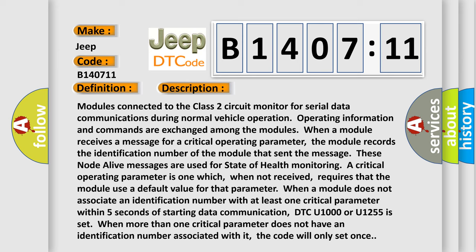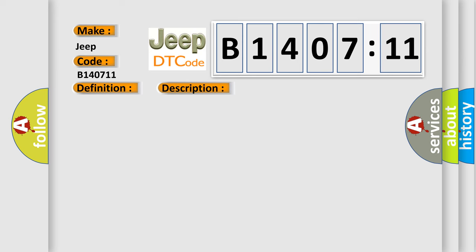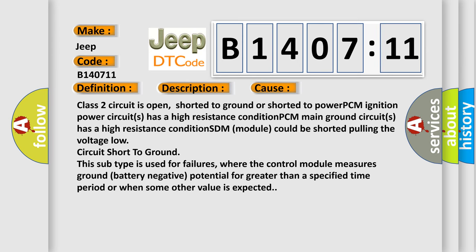This diagnostic error occurs most often in these cases: Class 2 circuit is open, shorted to ground or shorted to power PCM. Ignition power circuits has a high resistance condition. PCM main ground circuits has a high resistance condition. SDM module could be shorted pulling the voltage low. Circuit short to ground.